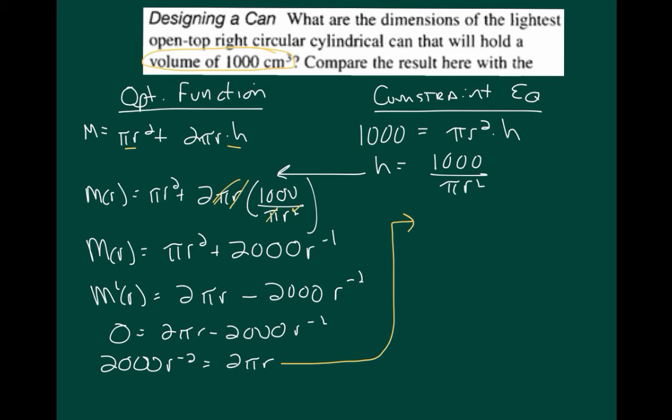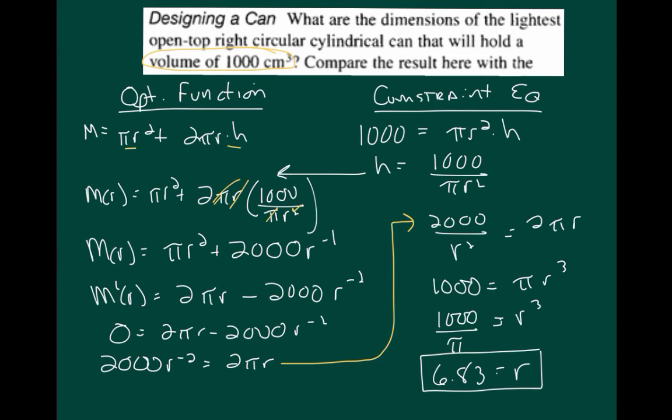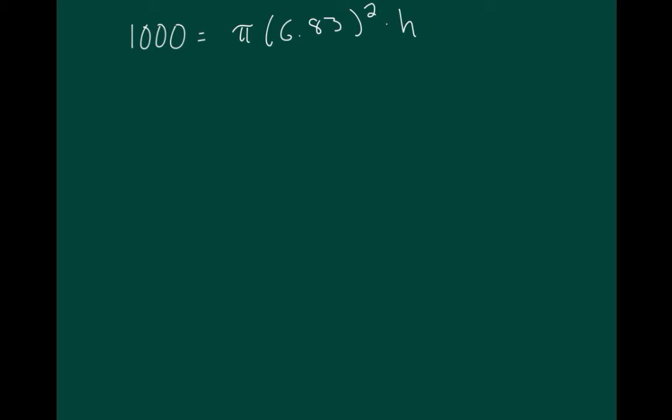So I'm going to have to rewrite that as 2,000 over r squared equals 2 pi r. Now, to solve this, I'll multiply both sides by r squared and divide both sides by 2. So 1,000 equals pi r cubed. So r cubed equals 1,000 over pi. I'm going to use a calculator to make that into something that's a little easier for me to deal with, and I get that r equals 6.83, and so now I'm going to use that to solve for the height of the can. So 1,000 equals pi times my new value for the radius of 6.83 squared times h. Solving for h, I see that that equals 1,000 over 6.83 squared times pi, which is a decimal equivalent of 6.82.